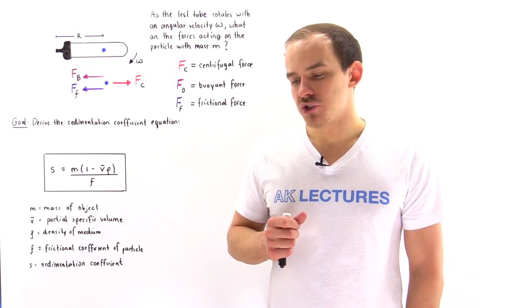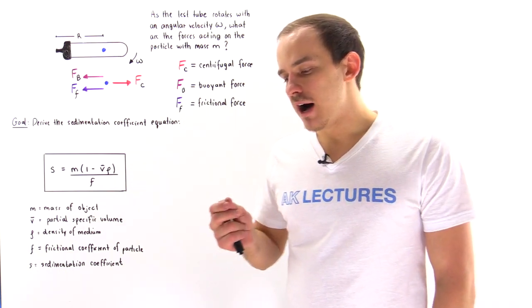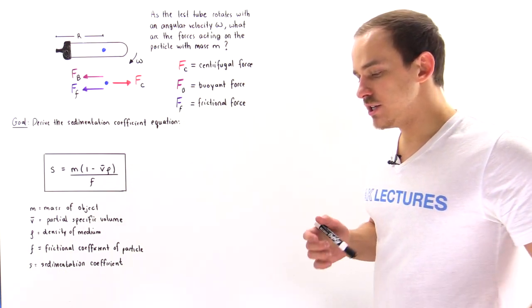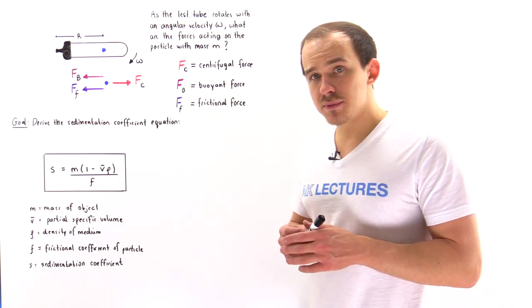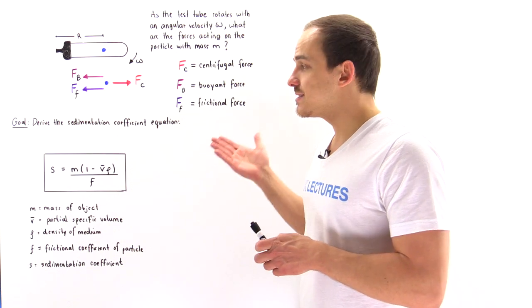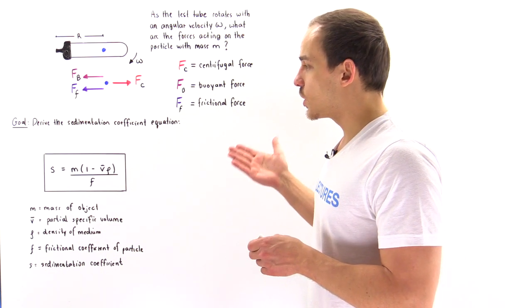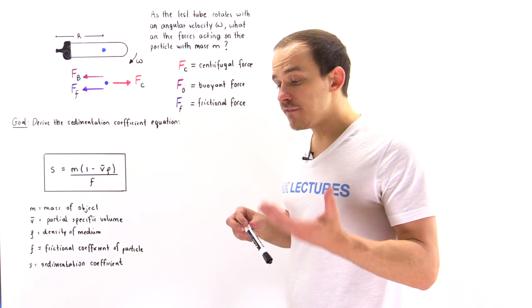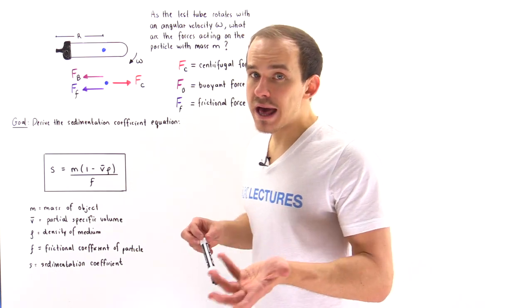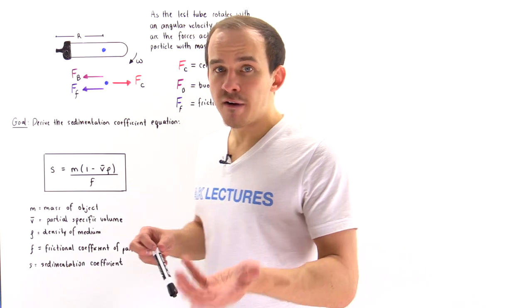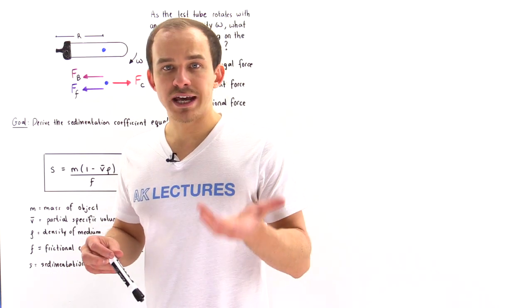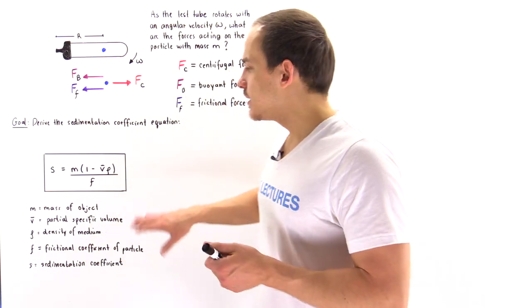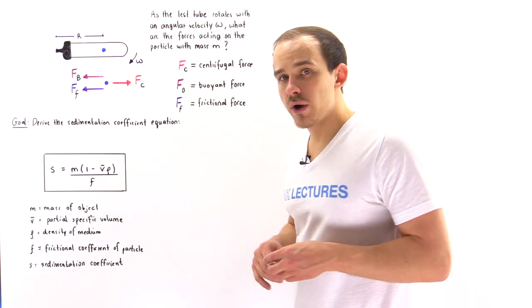In the previous lecture, we defined a quantity used in biochemistry known as the sedimentation coefficient. We defined this mathematically using the following equation.